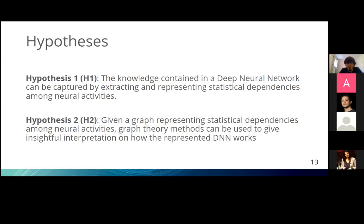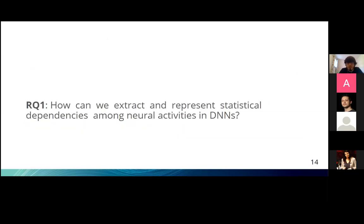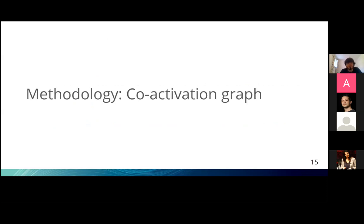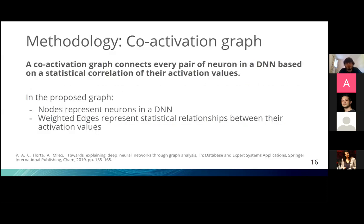We began by addressing the first hypothesis with the research question: how can we extract and represent statistical dependencies among neural activities — essentially, how can we build a graph based on statistical correlations? This leads to the first contribution of our work: the idea of the co-activation graph. A co-activation graph connects every pair of neurons in the DNN based on a statistical correlation of their activation values. Nodes represent neurons, and weighted edges represent statistical relationships between activation values.